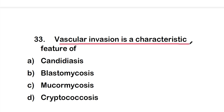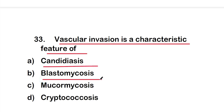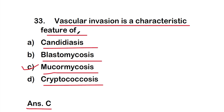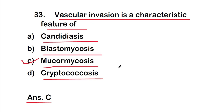Question 33: Vascular invasion is a characteristic feature of option A - candidiasis, option B - blastomycosis, option C - mucormycosis, or option D - Cryptococcus. The right answer is option C, mucormycosis. Vascular invasion is a characteristic feature of mucormycosis.